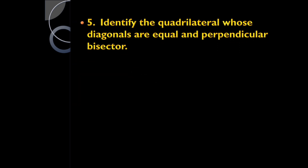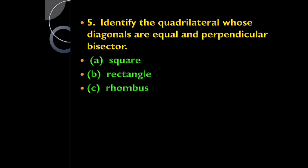Identify the quadrilateral whose diagonals are equal and are perpendicular bisectors of each other: square, rectangle, rhombus, or trapezium? It's a square, because in a square both diagonals are equal and they are perpendicular bisectors of each other.